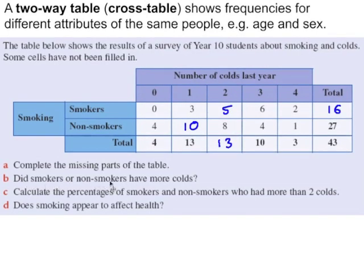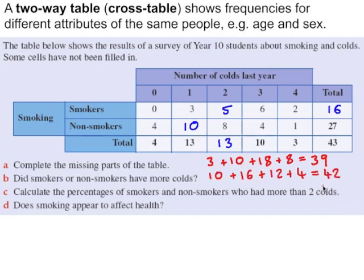Part B is asking, did smokers or non-smokers have more colds? This is actually quite difficult to answer because it's open to interpretation. But let's have a look at the total number of colds that smokers had last year. Three smokers had one cold. Five smokers had two colds each. So that's another ten colds. Six smokers had three colds each. And two smokers had four colds each. So the total number of colds that smokers had was thirty-nine. Using the same method for the non-smokers, non-smokers had forty-two colds altogether. But then we need to take into account the fact that in our survey there are more non-smokers than smokers. So let's instead refine our question.